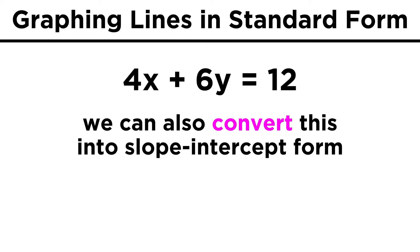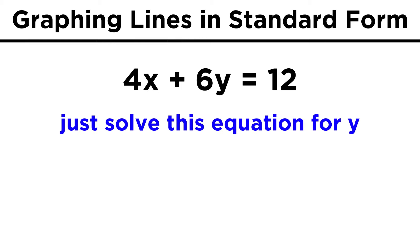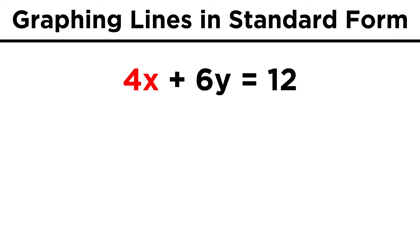The other thing we could do is convert this equation into slope-intercept form. All we have to do is solve for y. So the first thing to do would be to subtract four x from both sides. Now we have six y equals negative four x plus twelve.